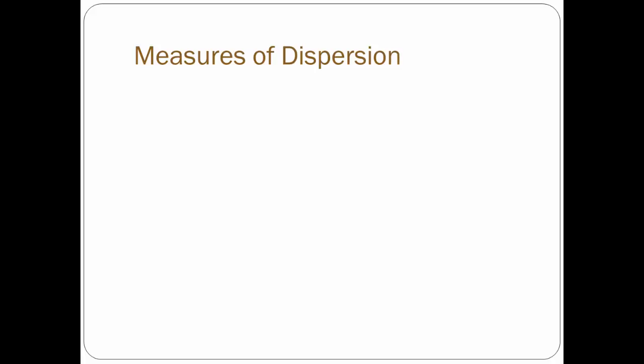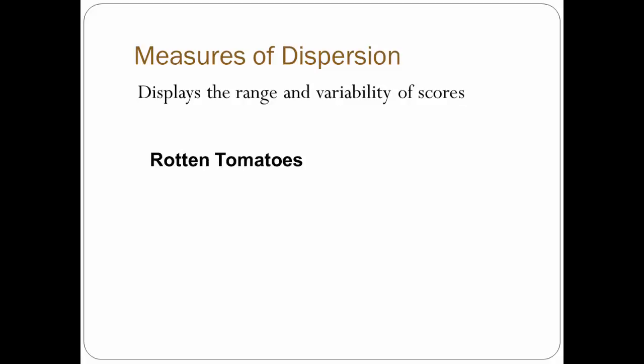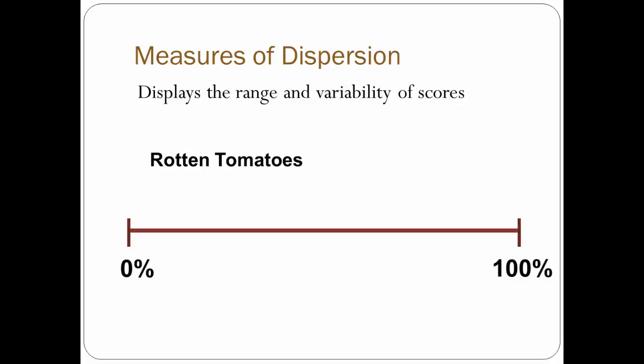Let's start with a brief discussion of measures of dispersion, which deal with the variability, or spread — sometimes called the scatter — of scores. For our example, let's turn to a popular website called Rotten Tomatoes, which reviews movies on a scale of 0 to 100, or what they call a film's freshness level.